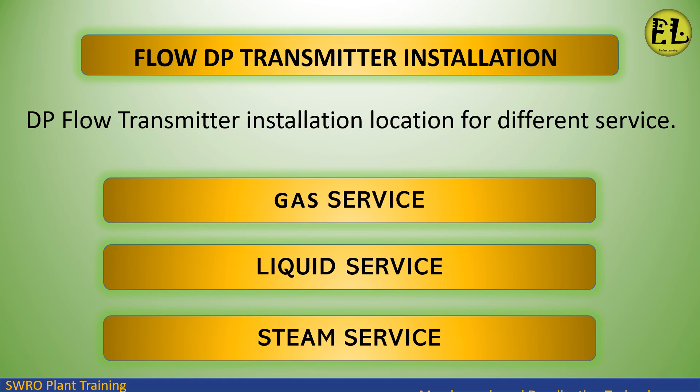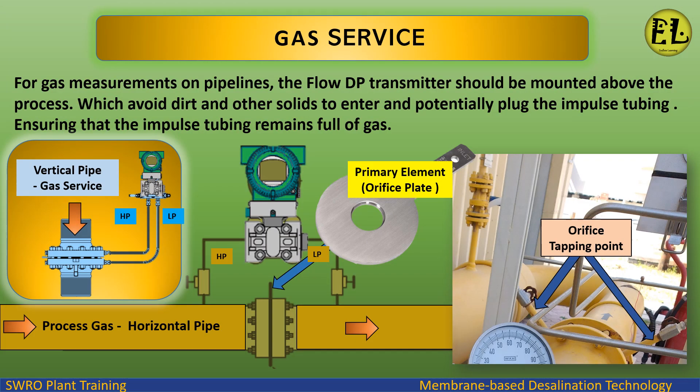For different services — gas service, liquid service, and steam service. For gas service, for gas measurements on pipelines, the flow DP transmitter should be mounted above the process to avoid dirt and other solids entering and potentially plugging the impulse tubing, ensuring the impulse tubing remains full of gas. DP flow meter installation for horizontal and vertical pipelines are shown.